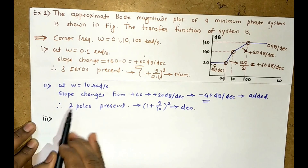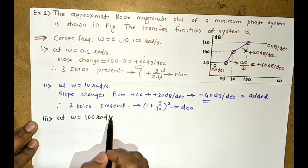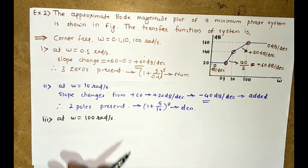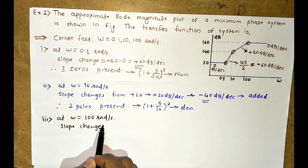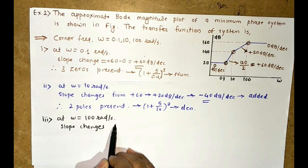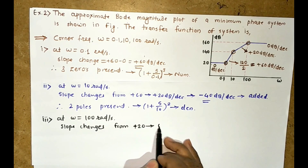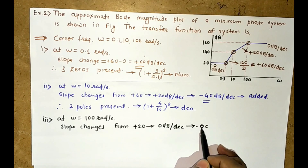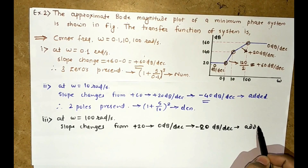Now for the third corner frequency at ω = 100 radian per second, the slope is changing from +20 dB per decade to 0 dB per decade, so a minus 20 dB per decade slope is added.